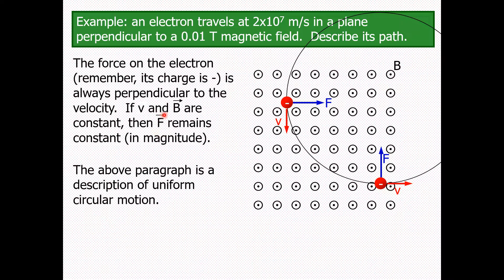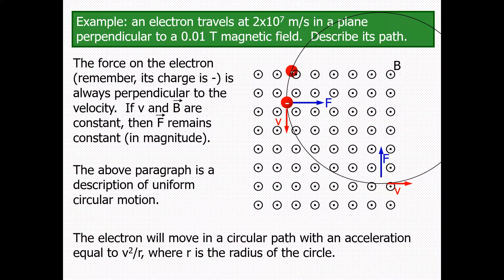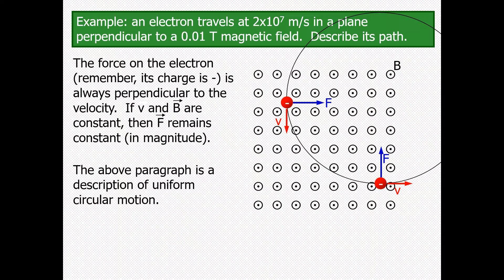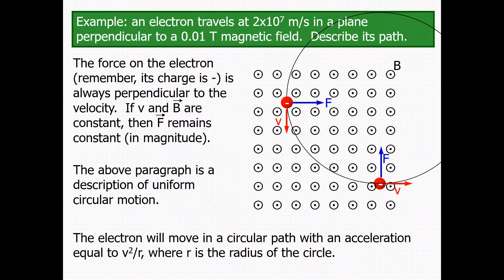The electron will move in a circular path with centripetal acceleration equal to v²/r, where r is the radius of the circular trajectory. This is the definition of uniform circular motion — the electron follows a circular path with centripetal acceleration v²/r.